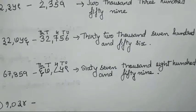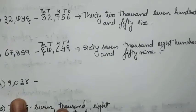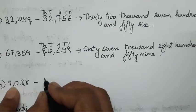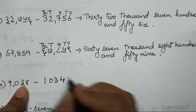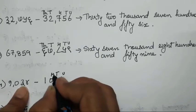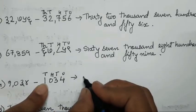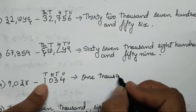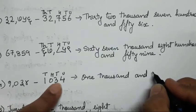Now the next one is given in Devanagari script — you all have to write the international one. The international number is going to be 1034. Unit, tens, hundred, thousand. Let's write it in words — that is one thousand and thirty four.